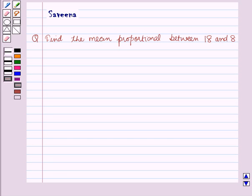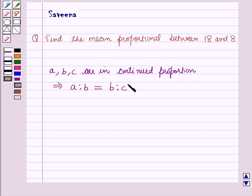Now before starting this question, we should know about the result of a proportion. If a, b, c are in continuous proportion, then a is to b is equal to b is to c.